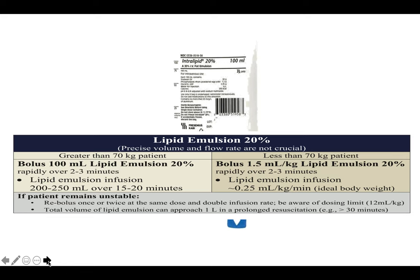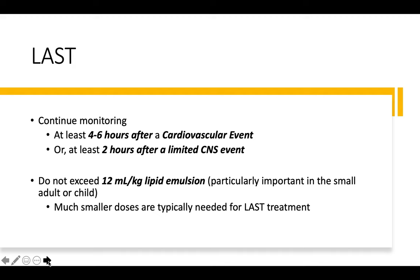The main treatment for LAST is intralipid. Have 20% intralipid available in all theatres or anywhere you do blocks. Precise volume and flow rates are not crucial — give intralipid as a bolus of at least 100 mLs over 2 to 3 minutes, followed by an infusion over 15 to 20 minutes of around 200 to 250 mLs. Re-bolus as needed. Maximum dose should not exceed 12 mL per kg. Monitor for at least 4 to 6 hours after a cardiovascular event, or 2 hours for a simple CNS event.